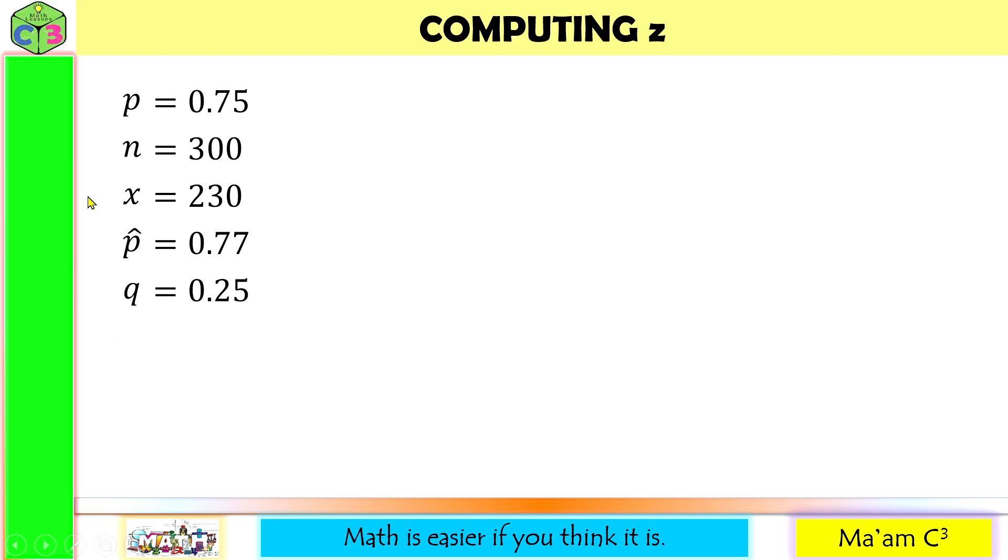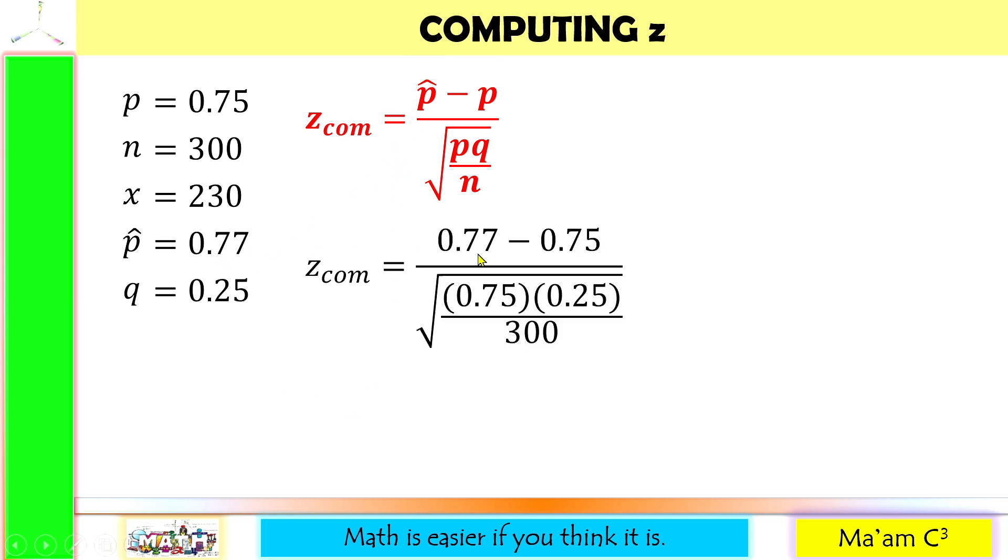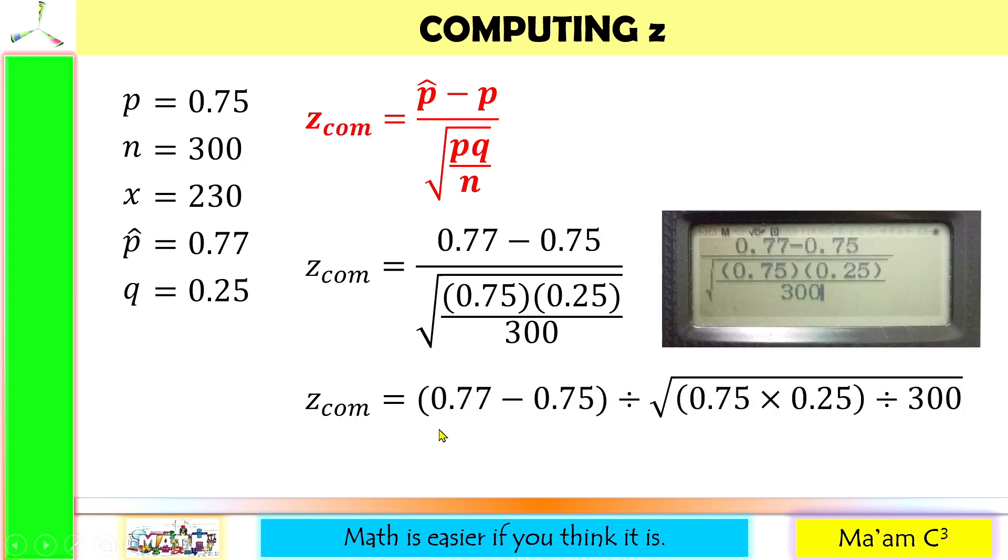Let's have an activity, computing Z. Let us recall our answers in our activity earlier, and also the formula for computing the Z statistic. Previously, we used the notation Z tab because the value comes from the Z table. Now, let us use Z-com to indicate that the value comes from the computation using this formula. Let us substitute our given here. P hat is equal to 0.77, P is 0.75, P again is 0.75, Q is 0.25, and our N is equal to 300. You may encode this into your calculator like this way, and this will give us 0.8.